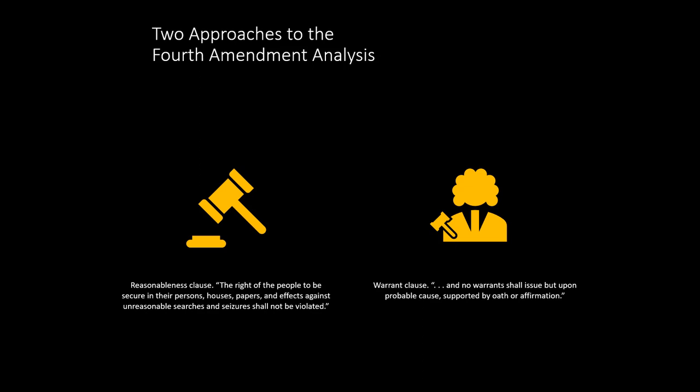If you were a strict constructionalist reading this literally, you would say it says 'persons,' so you can't conduct an unreasonable search, and seemingly you're going to have to have a warrant with probable cause. You could argue that strictly reading the Constitution would really kill the idea of stop and frisk. But the courts have never gone that far — they've certainly never embraced that interpretation.